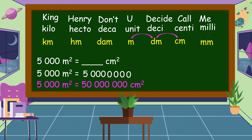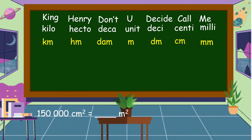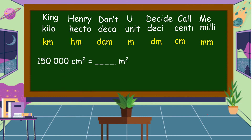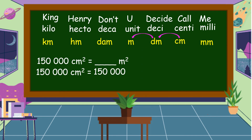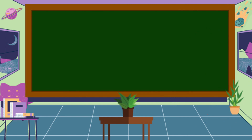Therefore, 5,000 square meters equals 50,000,000 (50 million) square centimeters. Another example: convert 150,000 square centimeters to square meters. We count two jumps from centimeter to meter, meaning four decimal places. Since we're converting from a smaller to a larger unit, we move the decimal point four places to the left, or cancel four zeros. Therefore, 150,000 square centimeters equals 15 square meters. I hope you understood our lesson today — thank you for watching!